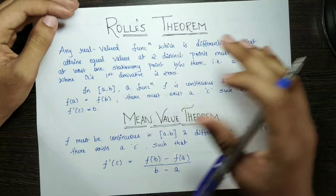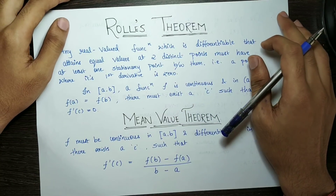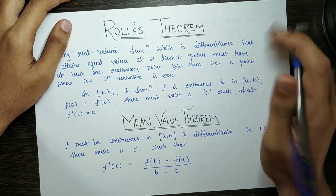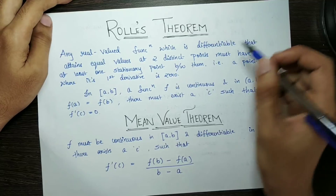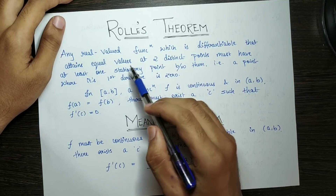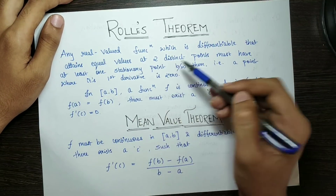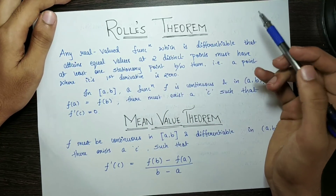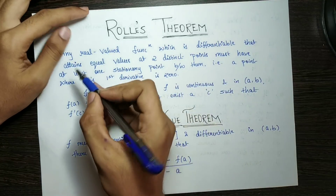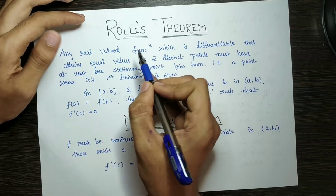Let's start with Rolle's Theorem. Any real-valued function which is differentiable and attains equal values at two distinct points — let's first understand what a real-valued function means.